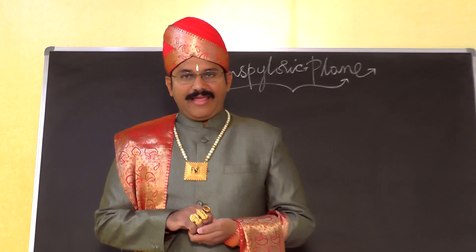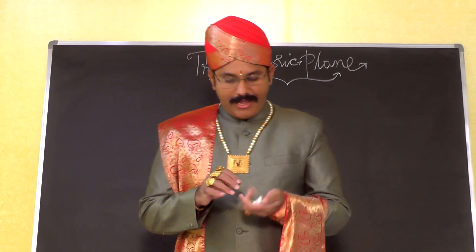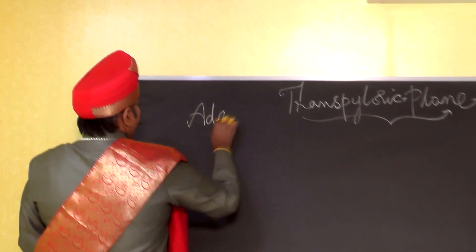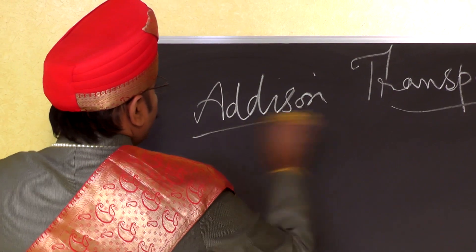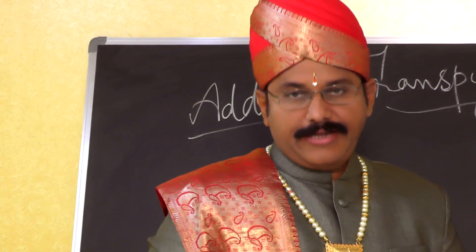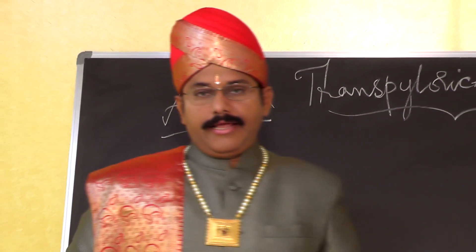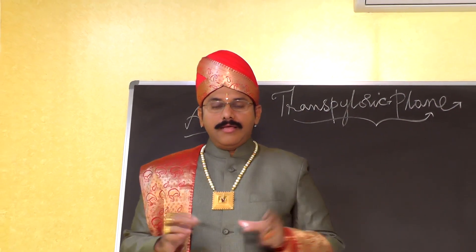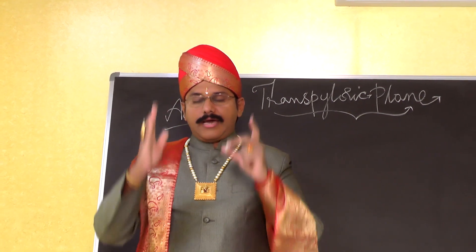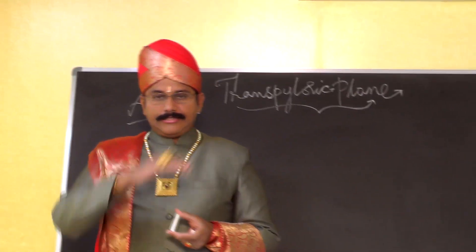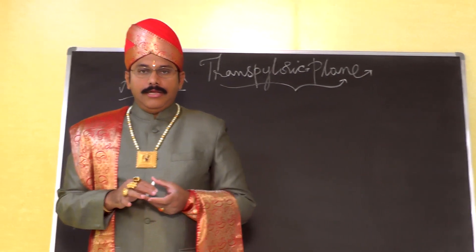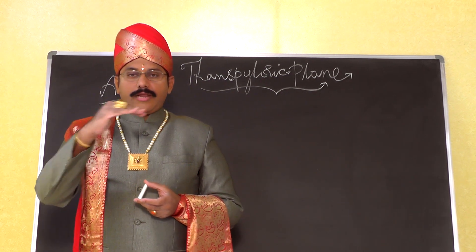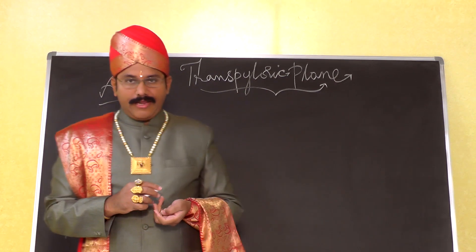The transpyloric plane is also called Edison's plane or the transpyloric plane of Edison. When we divide the anterior abdominal wall into nine quadrants, we draw two vertical lines — considered to be the mid-clavicular lines — and two horizontal lines, one above and one below. The upper horizontal line is called the transpyloric plane.